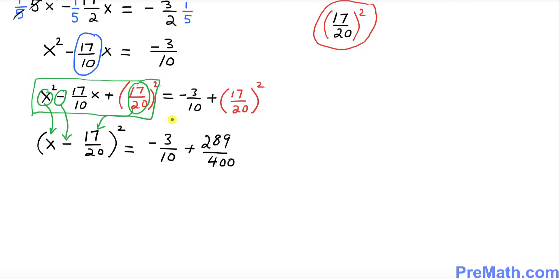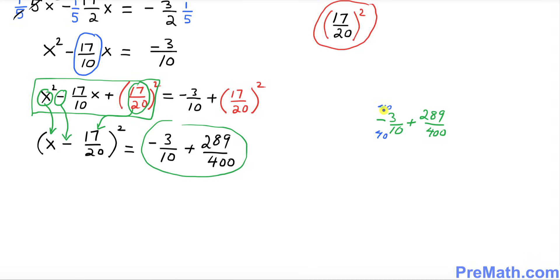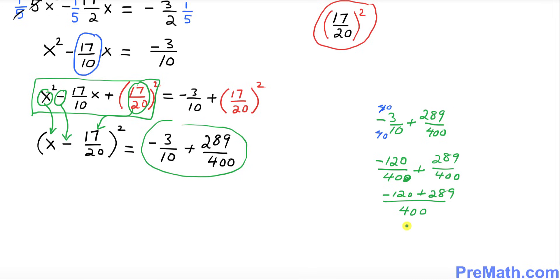Now let's take care of the fractions on the right hand side. Our denominators are 10 and 400, so we need a common denominator. We multiply the top and bottom of negative 3 over 10 by 40, giving us negative 120 over 400. Then negative 120 plus 289 over 400 gives us 169 over 400.